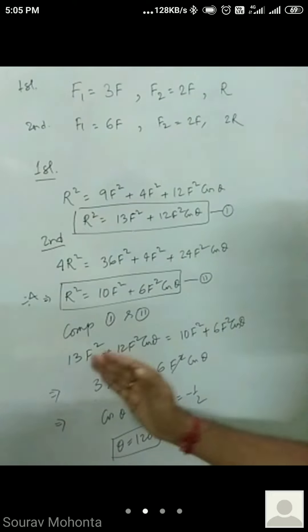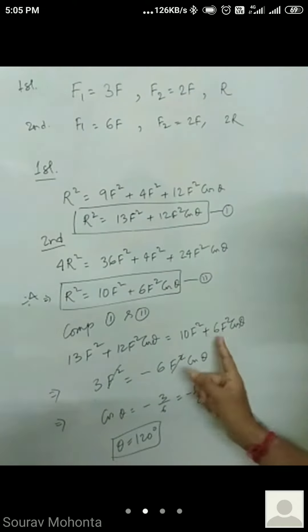So 6F square cos theta will be minus 3F square. Cos theta will be minus 3 by 6, that is minus half and cos theta minus half means theta value 120 degrees.